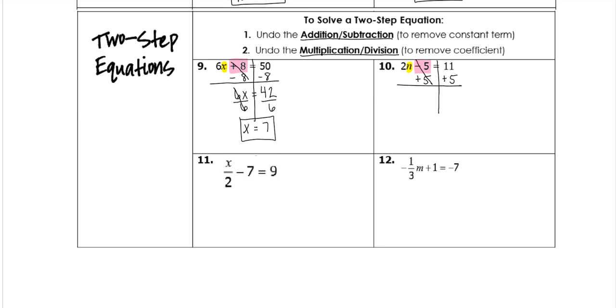These give me 0, bring my 2n down, and 11 plus 5 is 16. Now we have a multiplication of 2, which means we need to divide both sides by 2. These cancel to give me just 1n, or n by itself. And then 16 divided by 2 is 8.